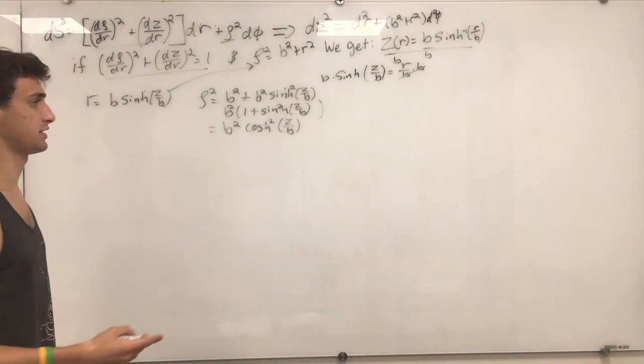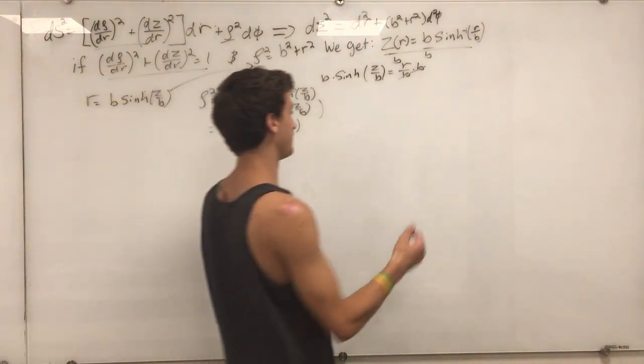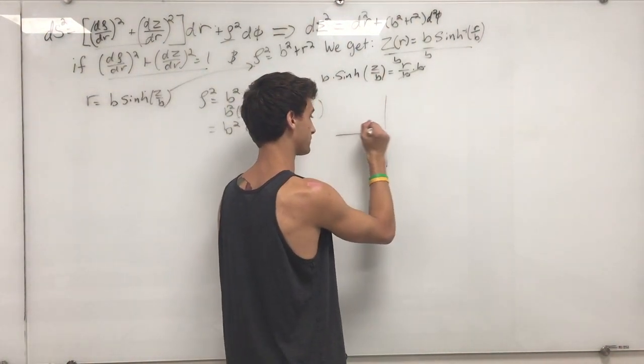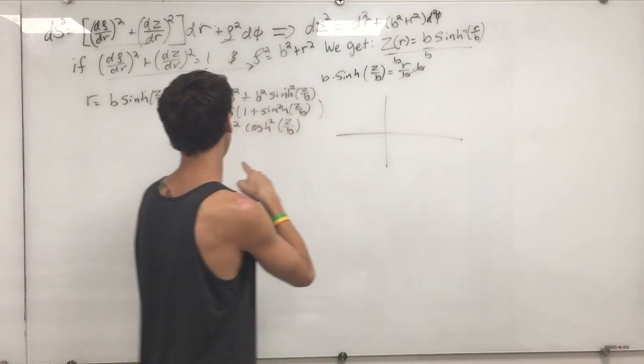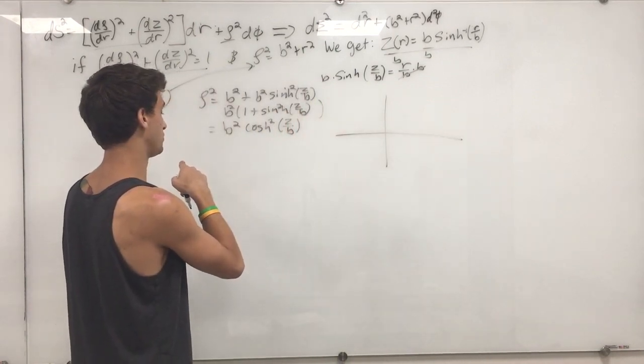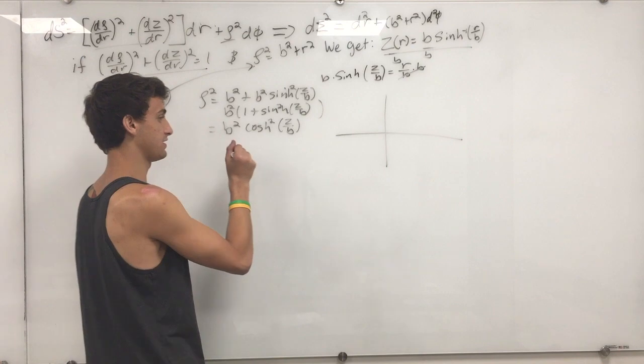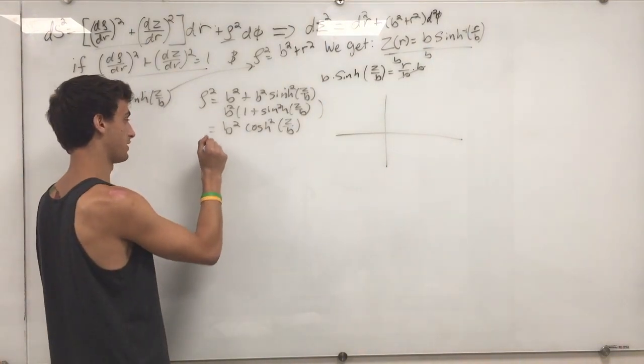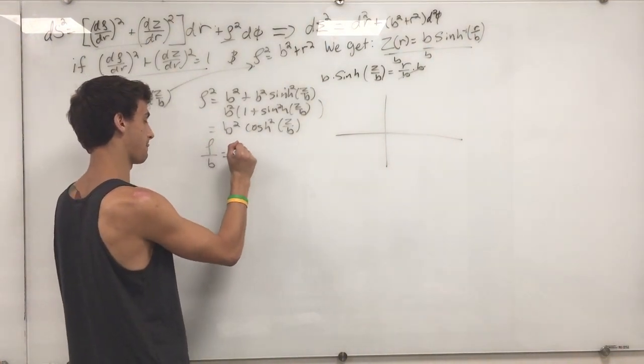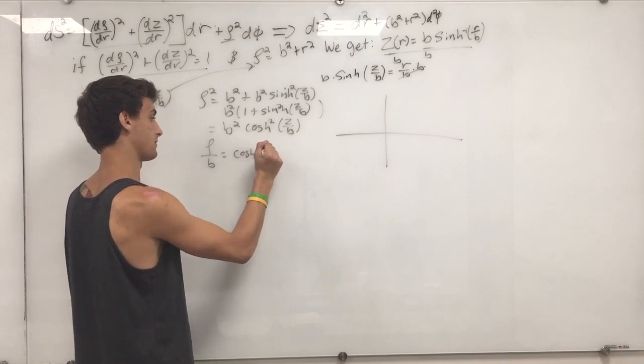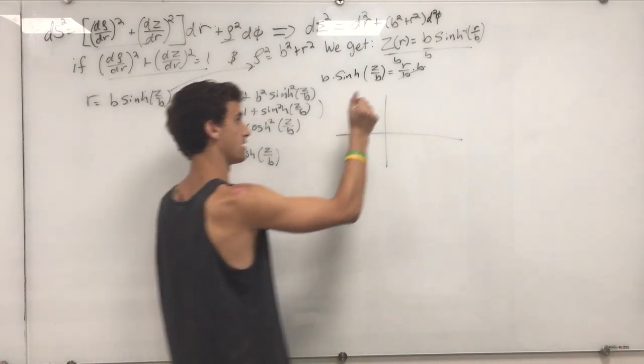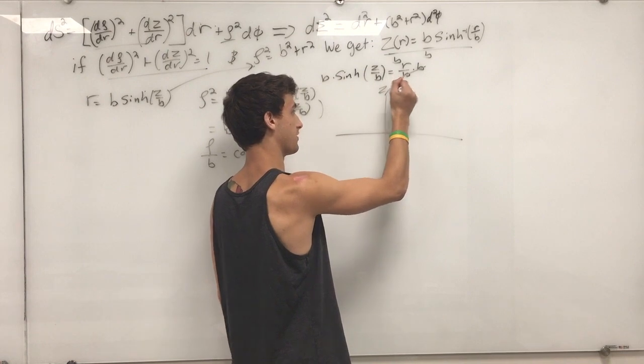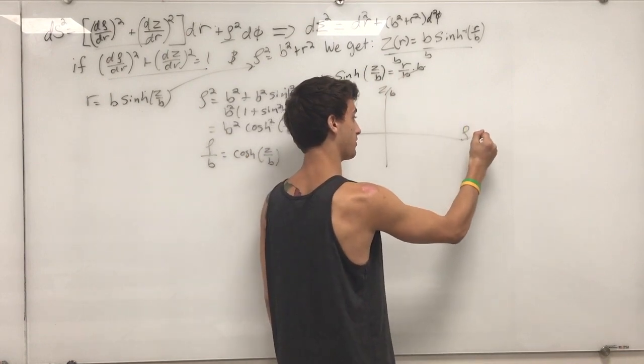Now, let's see what this looks like when we plot it. So, we're going to plot this function. It's rho over b. So, on this axis, it's going to be z over b. This axis is going to be rho over b.